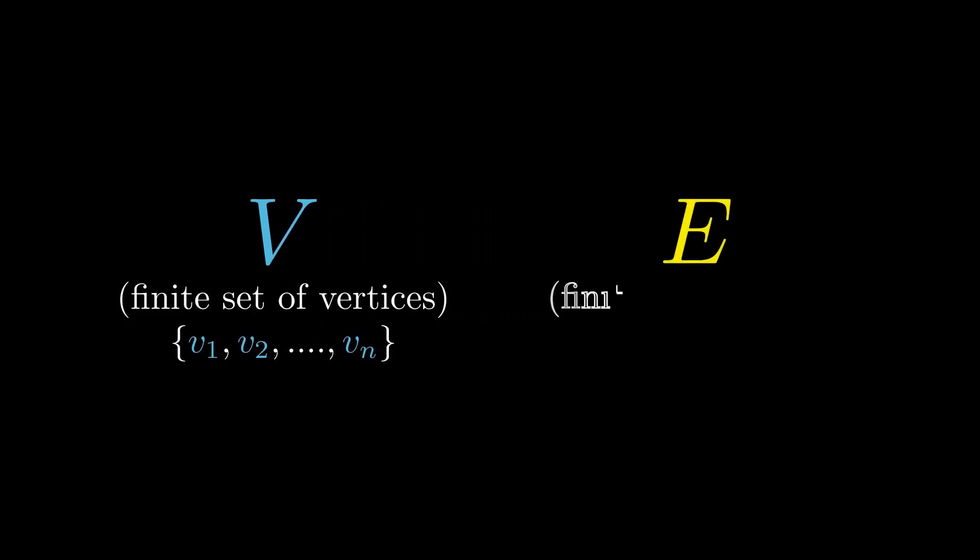Now let us define graph in a more rigorous or abstract approach. A simple graph is defined to consist of the two finite sets: the set V, that is the set of vertices, and the set E, set of edges. An edge is actually an unordered pair of two vertices.